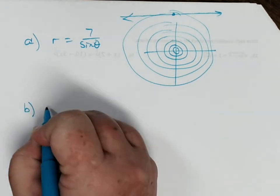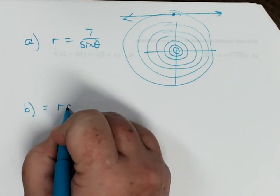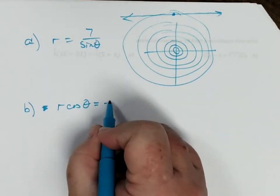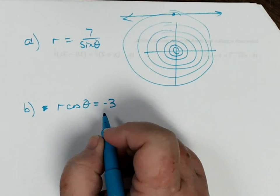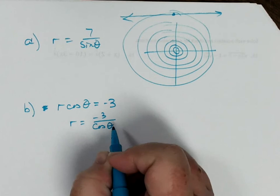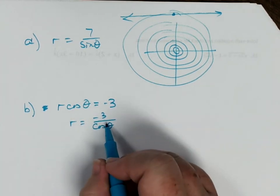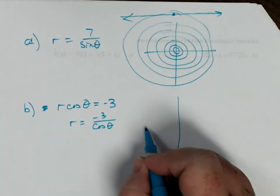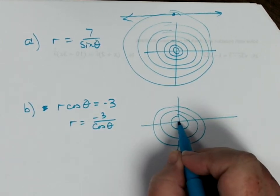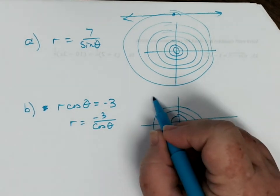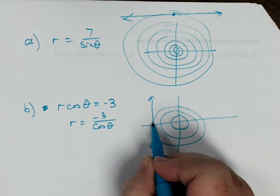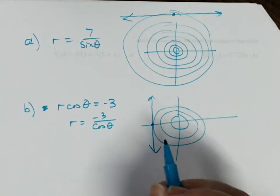For example B, if I had r cosine of theta equals negative 3, then to graph it, r equals negative 3 divided by cosine of theta, I know that it's going to be a vertical line. It's going to have 3 circles on my polar graph, but it's going to be to the left of the pole. So it would be a vertical line that passes through pi, 3, or 0, negative 3, passing through that point.